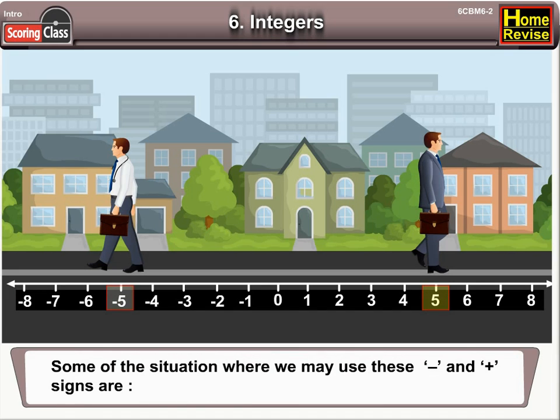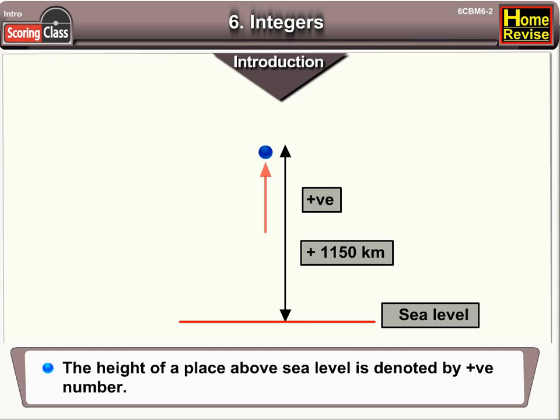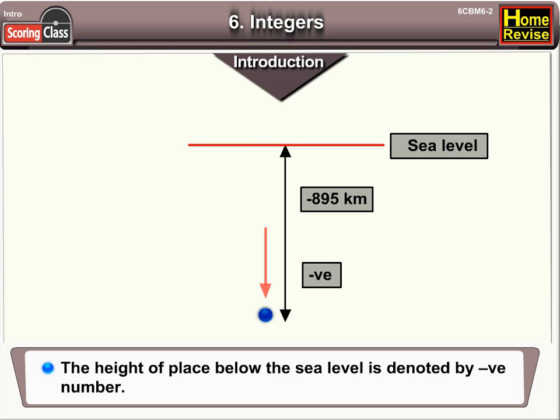Some of the situations where we use these negative and positive signs are: The height of a place above sea level is denoted by a positive number. The height of a place below sea level is denoted by a negative number.